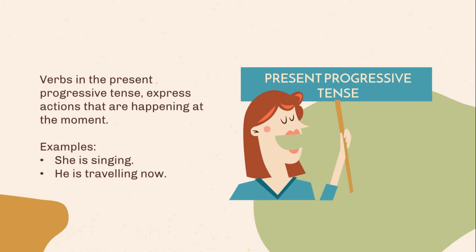Present progressive tense. Verbs in the present progressive tense express actions that are happening at the moment. Examples: She is singing. He is traveling now.